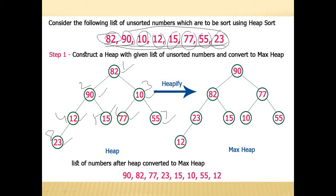As per the properties of a heap tree, the root element should be maximum. So you should start with the leaves. Observe that 23 and 12: 12 is the root element for 23, but it is not following the heap property. So we swap the elements — 23 will come up. Then looking at 23, 15, and 90: 90 is the root element and it is maximum compared to its children, so it is following the heap property.